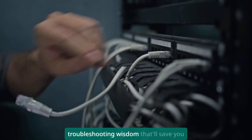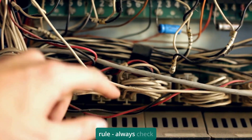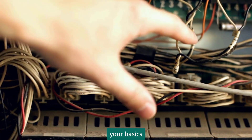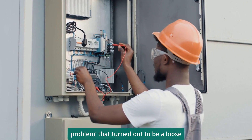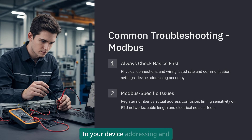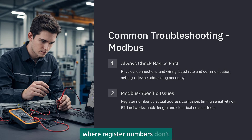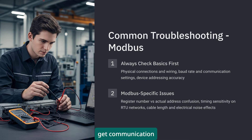Now let me share some troubleshooting wisdom that'll save you hours of headaches. First rule: always check your basics first. I can't tell you how many times I've been called out for a protocol problem that turned out to be a loose wire or wrong baud rate setting. For Modbus, pay attention to your device addressing and register mapping — Modbus has a quirky thing where register numbers don't always match the actual addresses used in the protocol. And remember, Modbus RTU is very sensitive to timing; if your cable runs are too long or you've got electrical noise, you'll get communication errors.